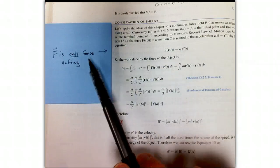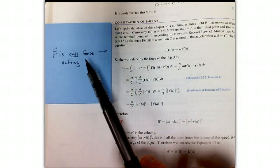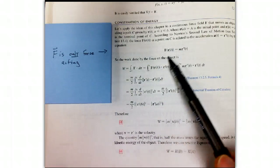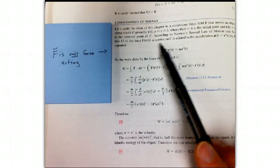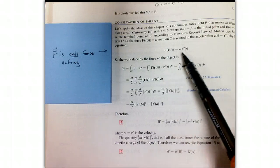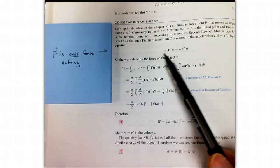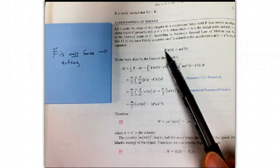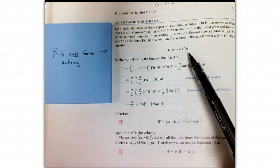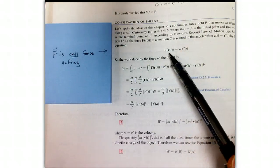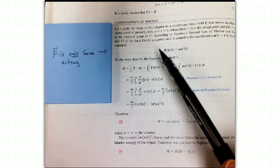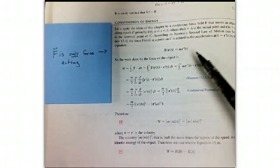One thing that he doesn't make super clear here is that this is only true if this is the only force that's acting. Usually it's the sum of all forces that gives you ma. So we're assuming that there's just really one force field that's making the motion. Or you could say, if there's more than one force field, what if the force field we're interested in were the only motion? What would happen?